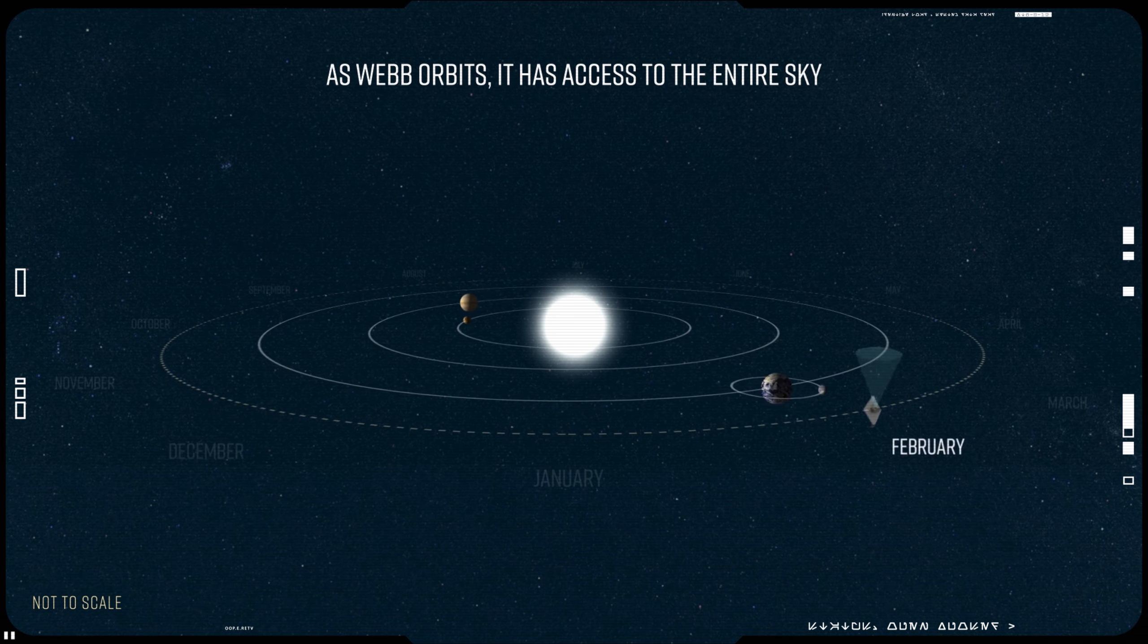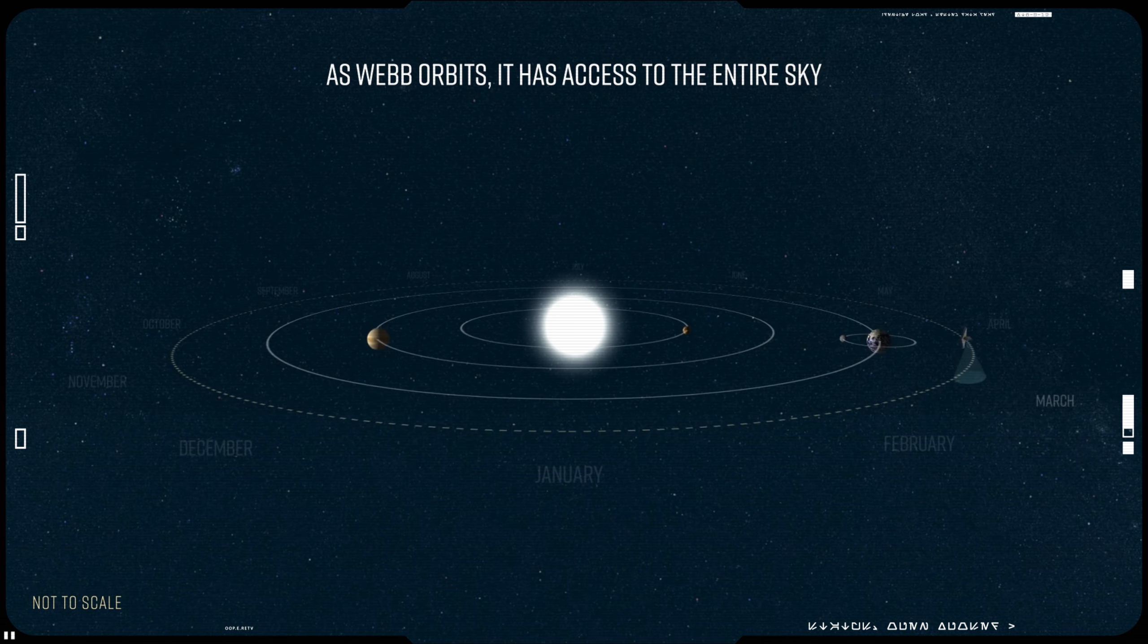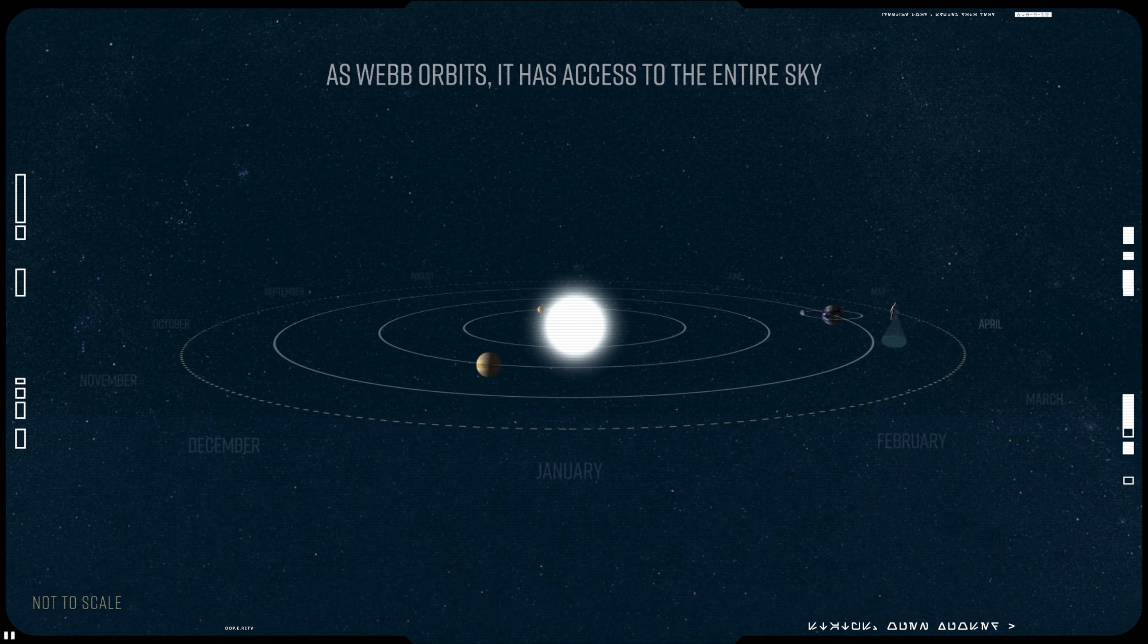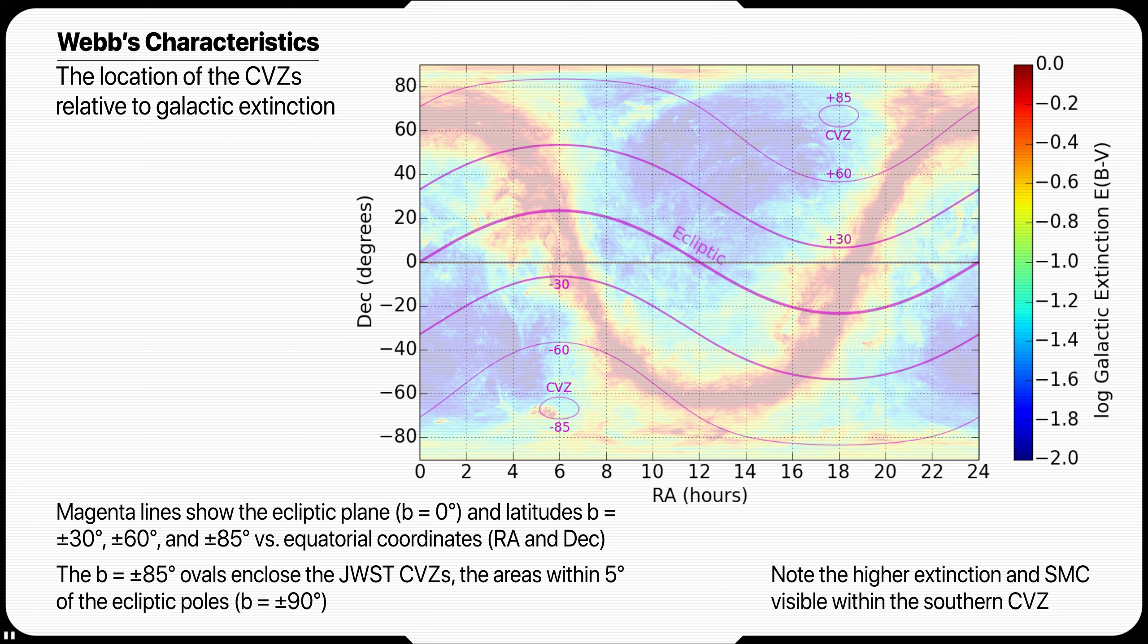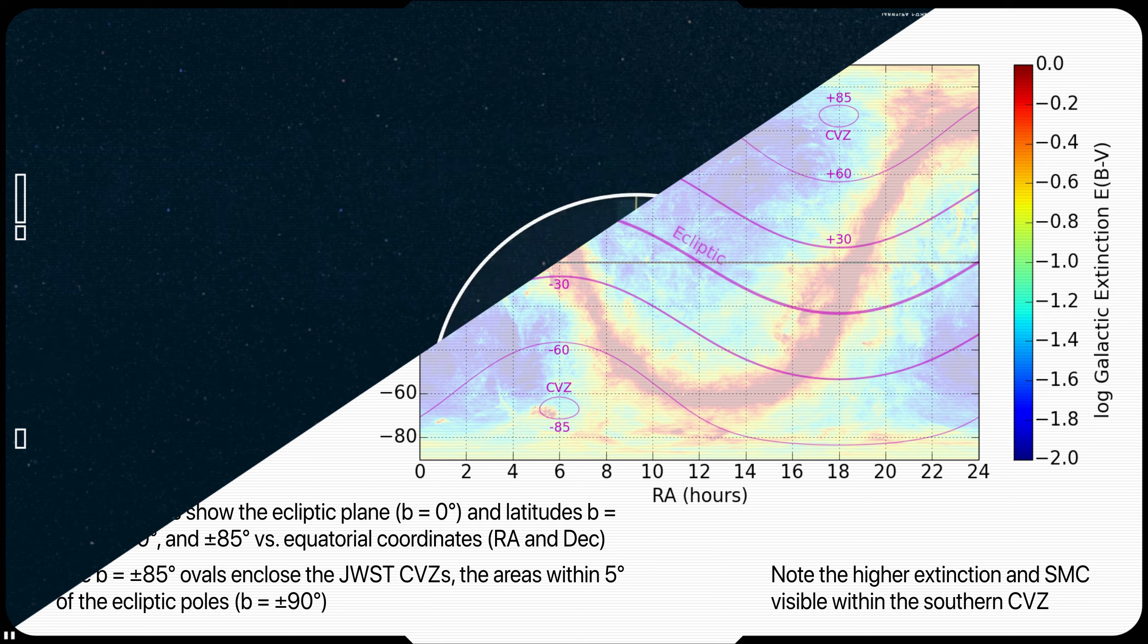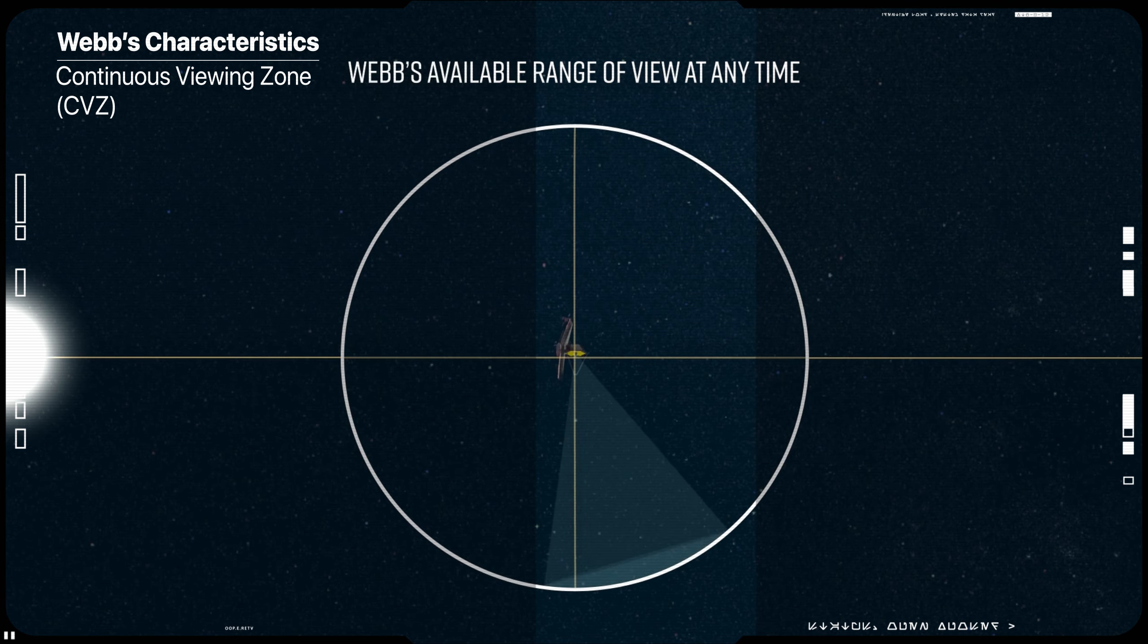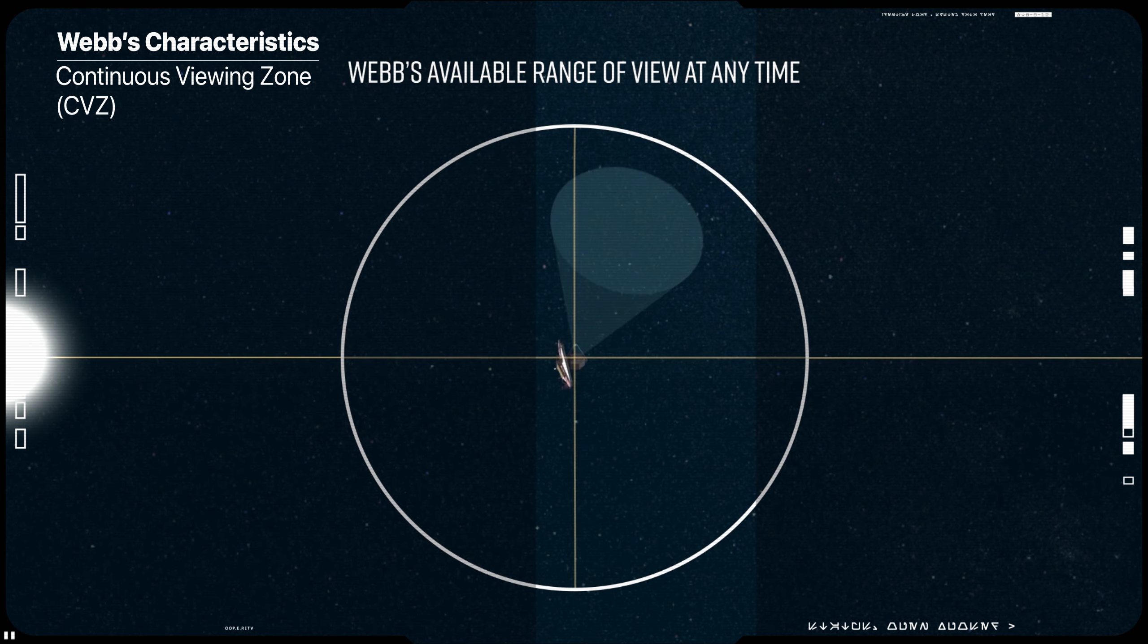These windows and allowed position angles can be calculated for a particular target using one of the Webb target visibility tools. James Webb has a relatively small continuous viewing zone CVZ, located within 5 degrees of the ecliptic poles. The CVZ is important for some science programs that involve monitoring throughout the year and will be useful for calibration observations.